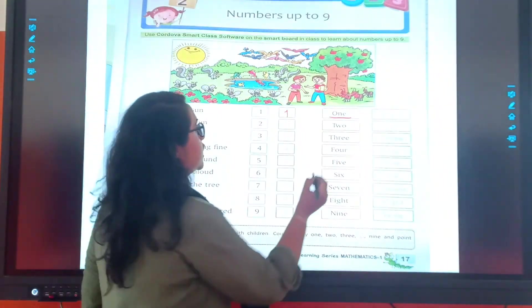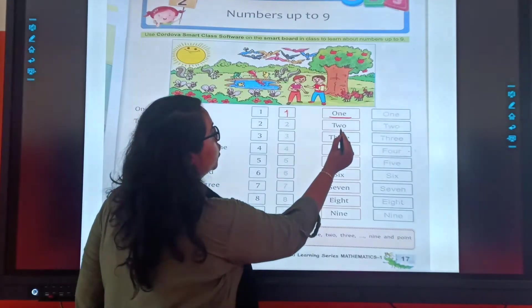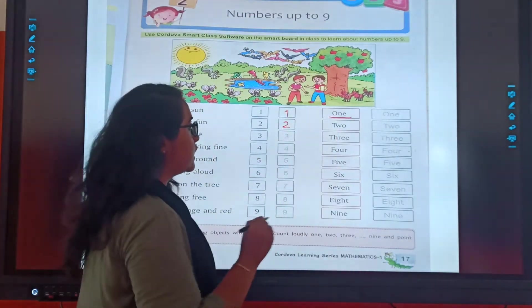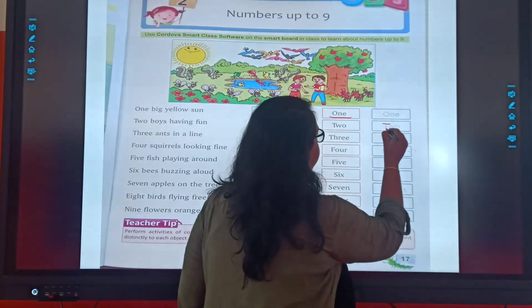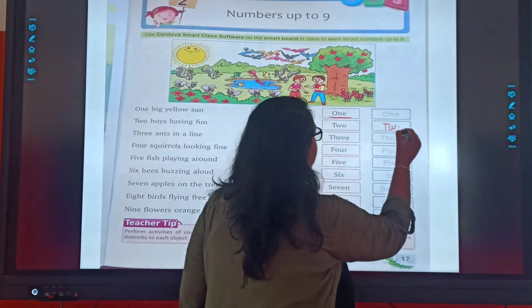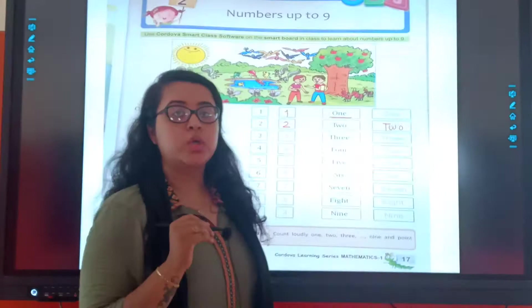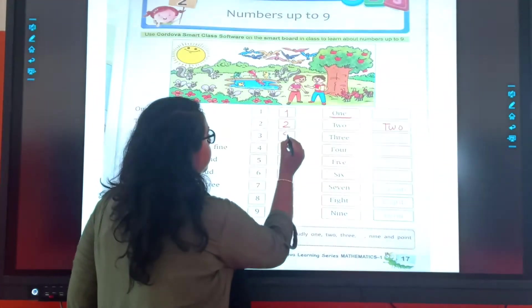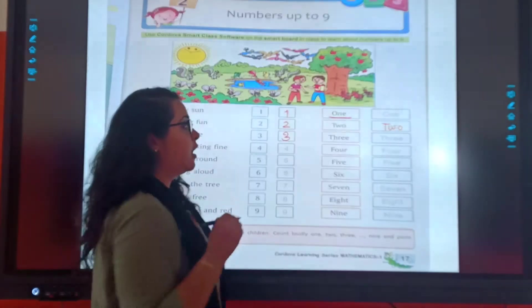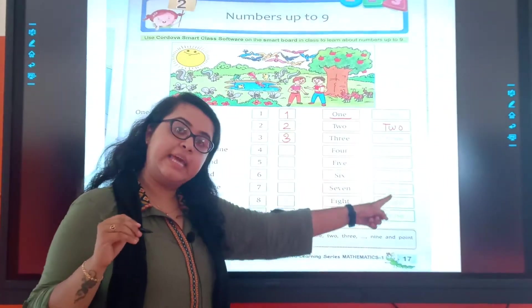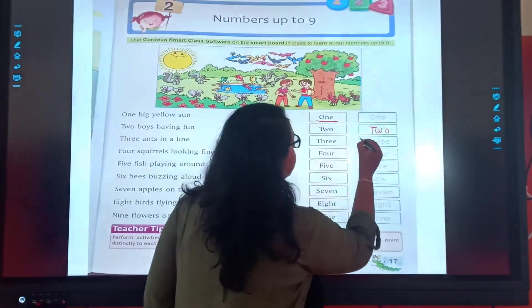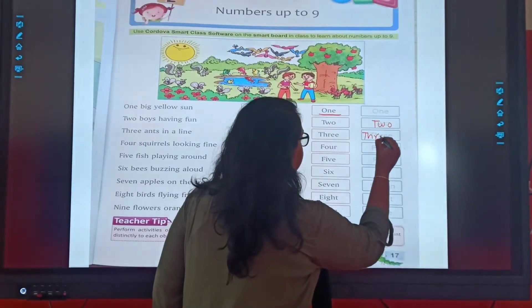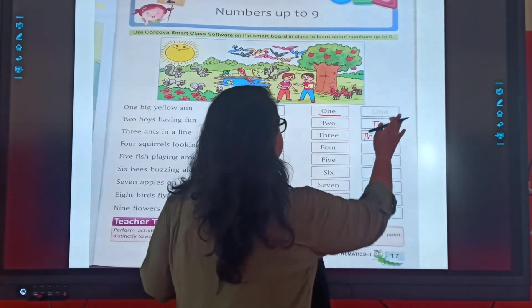2 — T, W, O. 2. T, W, O. 2. 3. First, you will write 3, and then we will write it here. Understood? T, H, R, E, E. 3.